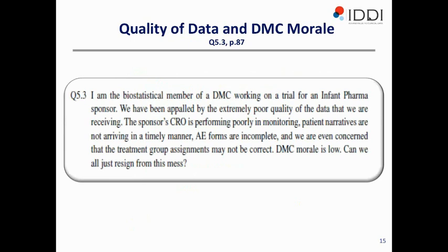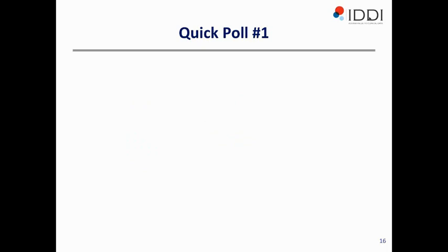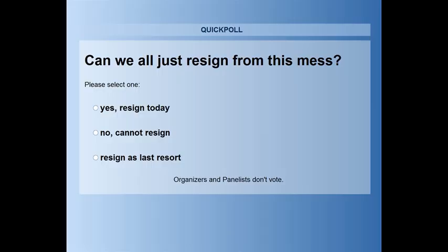Question: I am the biostatistical member of a DMC working on a trial for an infant pharma sponsor. We've been appalled by the extremely poor quality of the data we are receiving. The sponsor's CRO is performing poorly in monitoring. Patient narratives are not arriving in a timely manner, AE forms are incomplete, and we're even concerned that the treatment group assignments may not be correct. The DMC morale is low. Can we all just resign from this mess? We now have quick poll number one — Andrew is going to poll the audience and report the results.